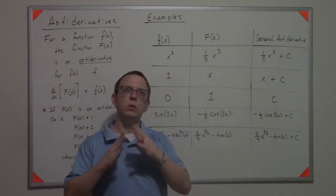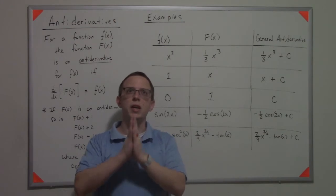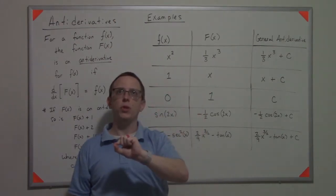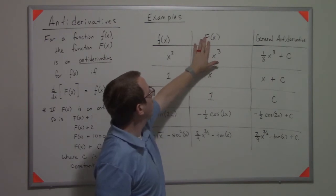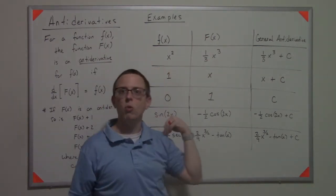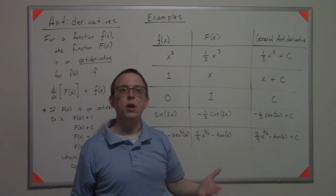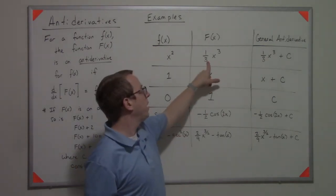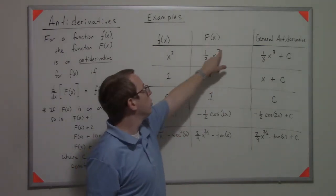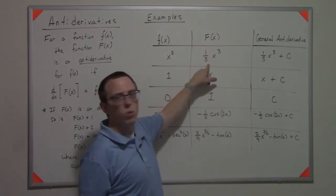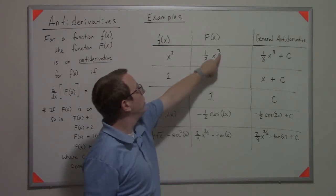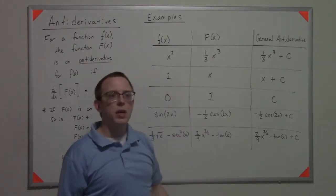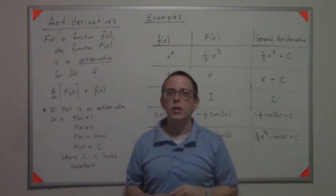For the power rule, I know I have to bring down the 3. So if I took the derivative of just x³, I would end up with 3x². But I don't want 3x², so I need to divide by that 3 here so that when the 3 comes down it will cancel. So the idea is a function and its antiderivative.